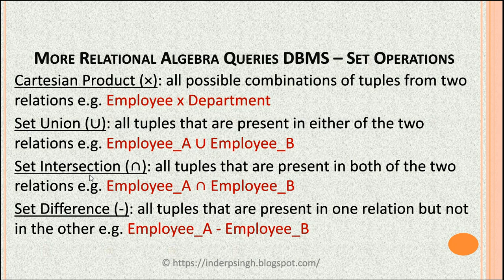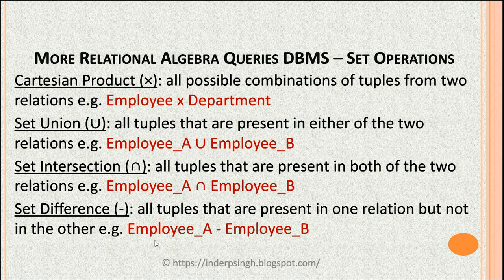Set intersection means all tuples that are present in both relations — so employee A intersection employee B produces only the common tuples that exist in both. Set difference means all tuples present in one relation but not in the other — for example, employee A minus employee B produces only those tuples that exist in employee A but not in employee B.